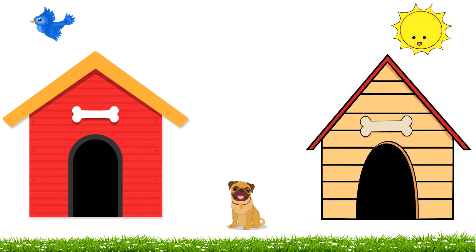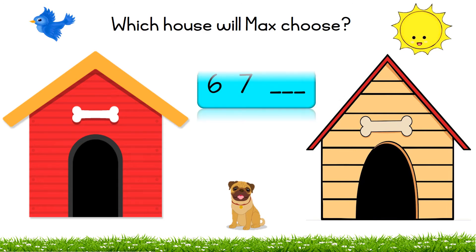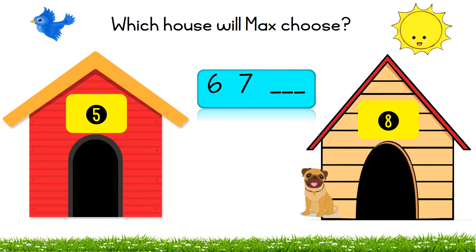Look at the cute puppy! Max. Which house will Max choose? We have the number six, seven blank. Max has to choose the house with the number that comes after six and seven. Is it house number five? Or is it house number eight? Eight. Max chose house number eight. Good job!